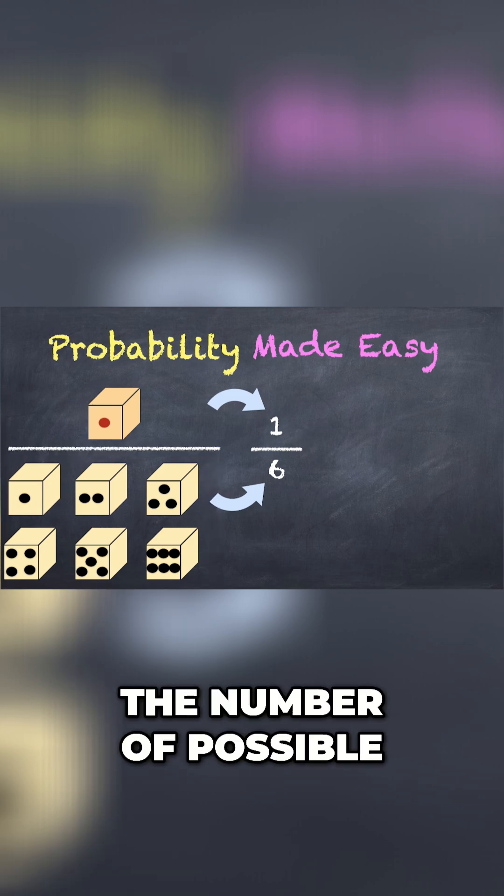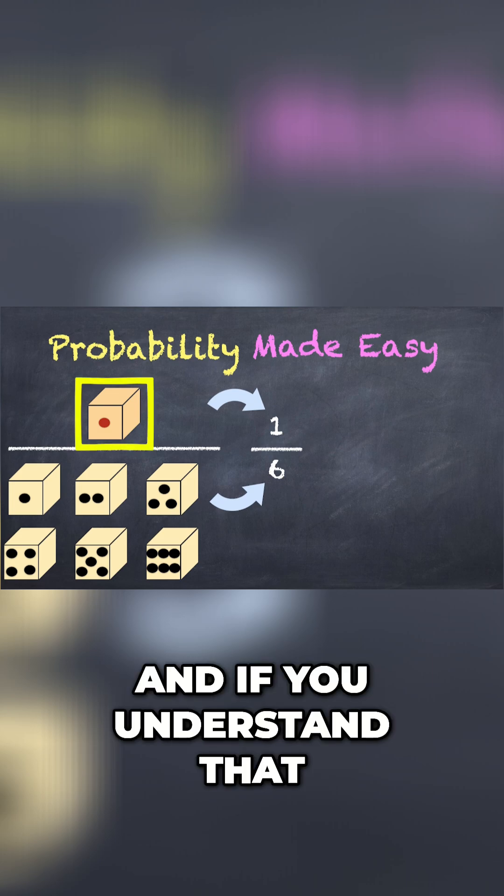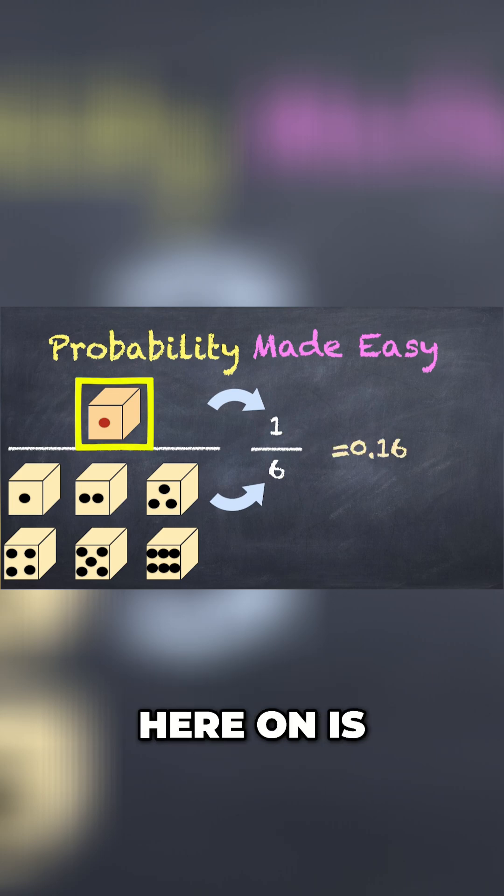The numerator at the top are the number of possible favorable outcomes that meet our criteria, in this case, a 1. And if you understand that, then everything from here on is going to be easy.